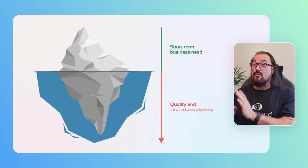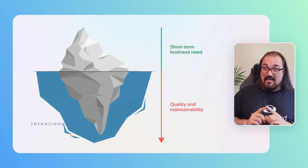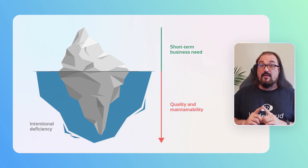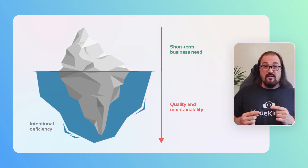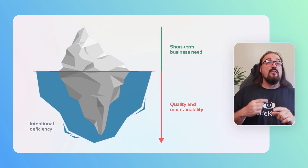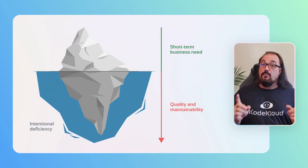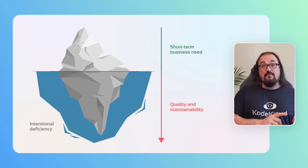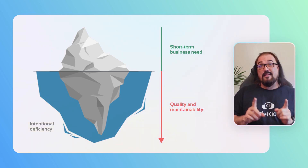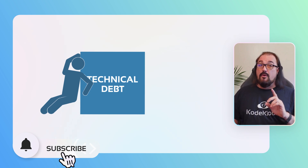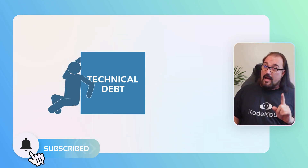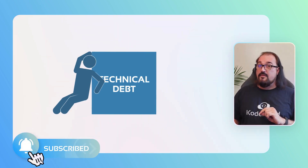Namely, technical quality and maintainability. This is intentional technical debt because it created an intentional deficiency in the quality of your code that you may or may not have to deal with later — in this case, we did. This, my friends, is why we are going to dive into the murky yet impactful world of technical debt.